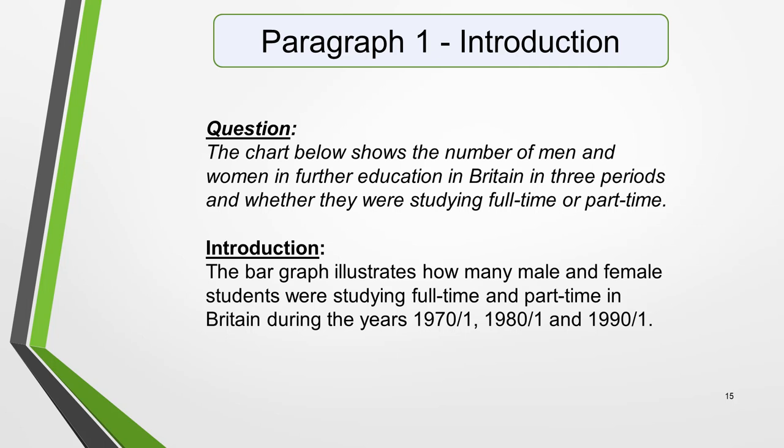You can do this by using synonyms and changing the sentence structure. For example, the question is: the chart below shows the number of men and women in further education in Britain in three periods, and whether they were studying full-time or part-time. And we could paraphrase it like this: the bar graph illustrates how many male and female students were studying full-time and part-time in Britain during the years 1970–71, 1980–81 and 1990–91.